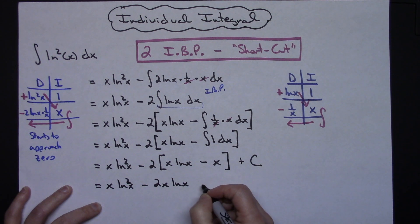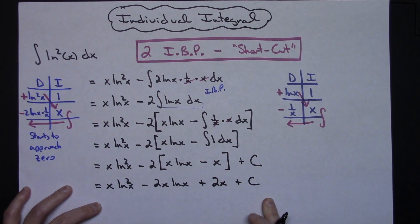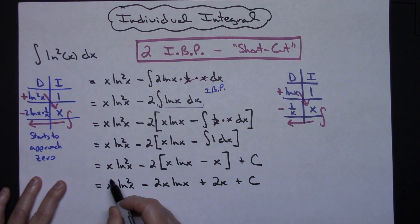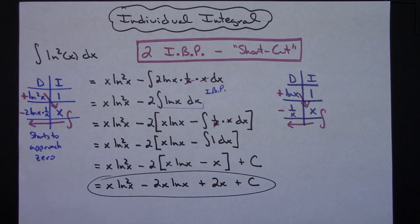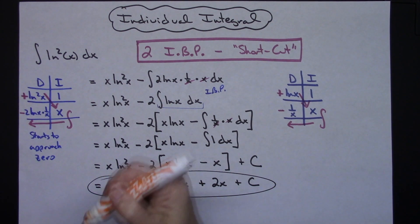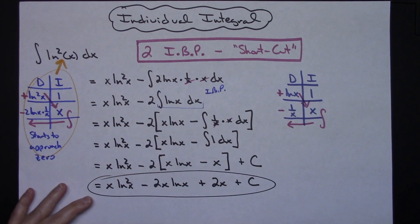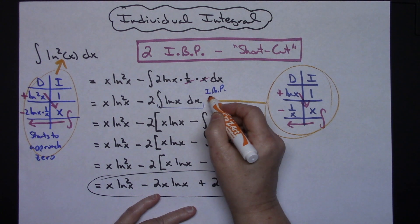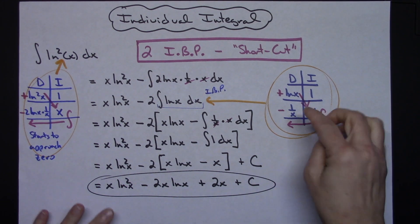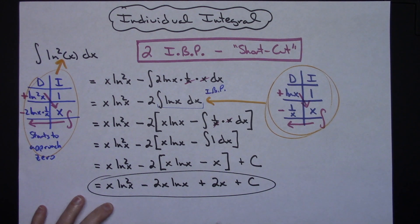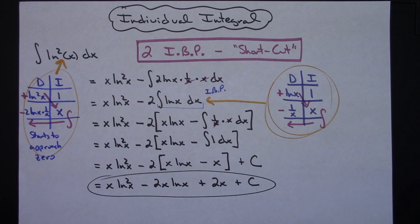Now that all the integration is done I'm ready for plus C. Distributing the 2 gives: x natural log of x quantity squared minus 2x natural log of x, and then negative 2 times negative x is positive, so plus 2x plus C. That's a perfectly good answer — if you needed to factor out an x you could, otherwise you can stop right there. That's a nice integral involving two integration by parts using the shortcut method, which works really nicely with polynomials, trig functions, and natural log functions. Thanks for watching — if the videos are helping please share with your friends and don't forget to subscribe.